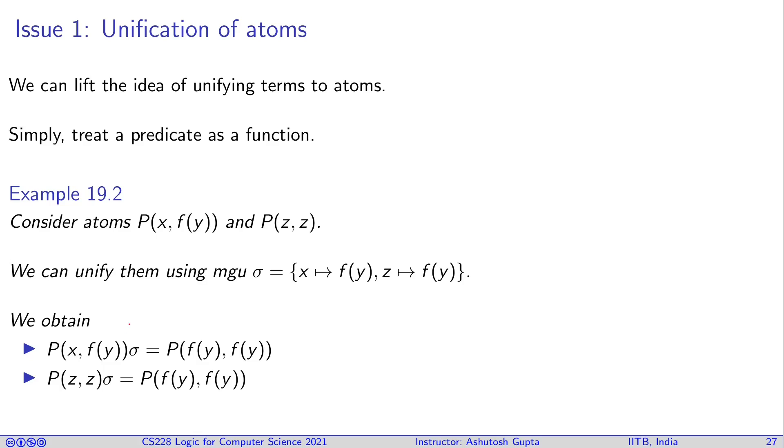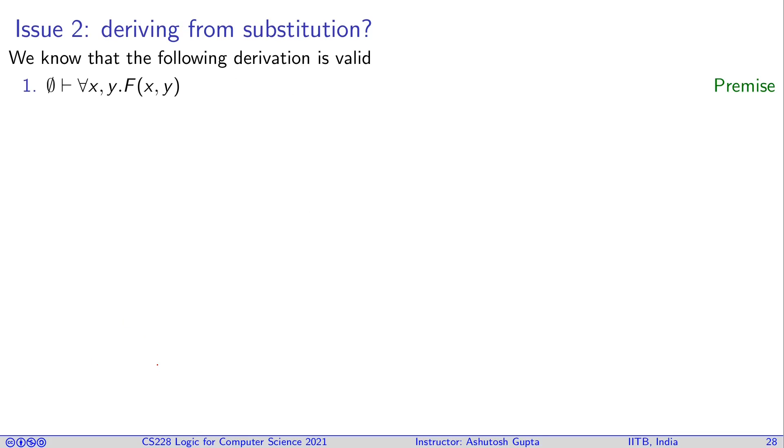After applying this unification, we obtain these terms. Now, now let's look at the second issue. So we will go by an example. So we know that the following derivation is valid. What is this following derivation? Let's suppose I give you for all X, Y, F(X, Y).